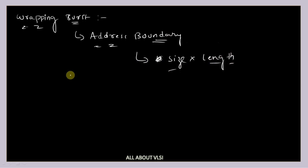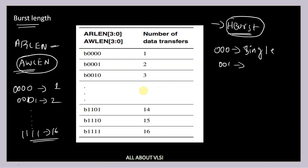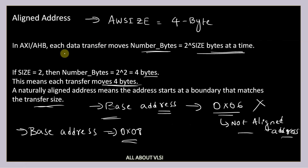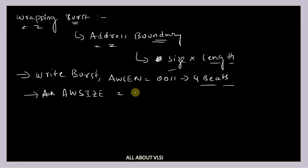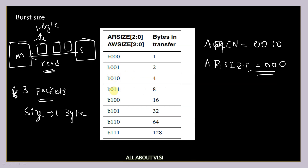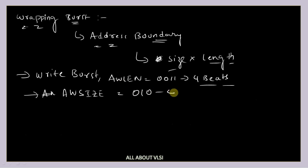For example, if we want to perform a write burst operation where AW_LENGTH is equal to 4 beats (binary: 0b0011), that means 4 beats of data. Next, AW_SIZE — the size of each packet — is 4 bytes (binary: 0b010). So the size of each packet is 4 bytes.